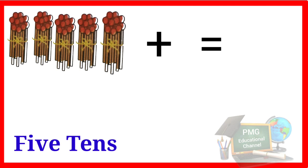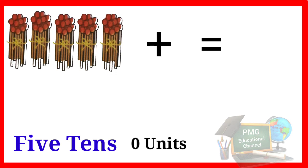So five tens zero units, fifty. Five tens zero units becomes 50, so we will write number 50: F-I-F-T-Y, 50.